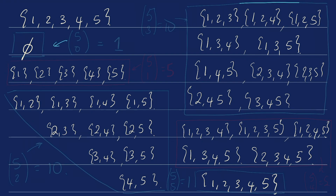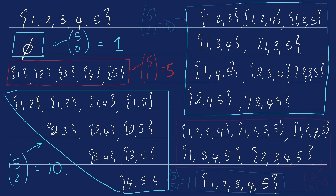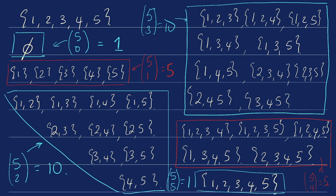Five choose zero: how many ways can you choose zero things? Only one way to get the empty set, so five choose zero is one. Here are all the ways to choose one thing out of a set of five — five choose one is five. This is all the ways to choose two things — five choose two is ten. Here are all the ways to choose four things — five choose four is five. And last but not least, there's only one way to choose five things, so five choose five is one.